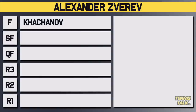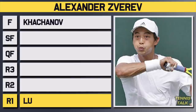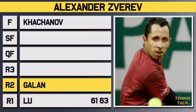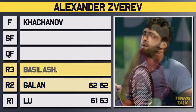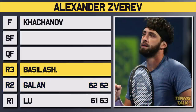Alexander Zverev entered the tournament as the number four seed and would take on Lu in the first round. This was no trouble for Zverev, who got through in straight sets, 6-1, 6-3. His second round matchup was against Gallon, the Colombian, and again an easy win in straight sets, 6-2, 6-2. His third round opponent was the tricky Basilevili, who had just come off beating the 13th seed Sonigo, and even though the second set was tight, Zverev got through in straight sets, 6-4, 7-6.